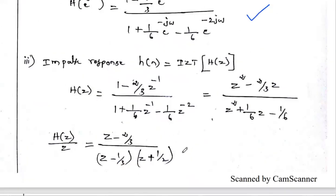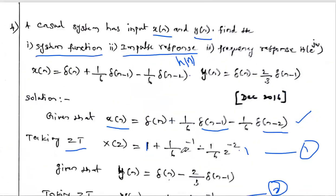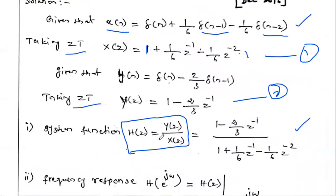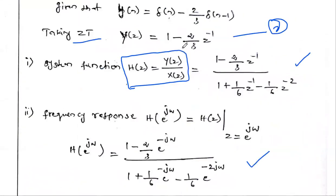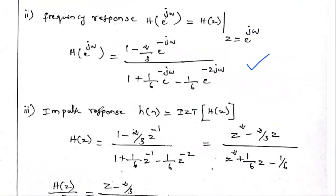So the impulse response is h(n) = −(2/5)(1/3)^n · u(n) + (7/5)(−1/2)^n · u(n). This is the impulse response of the given system. In summary: for given x(n) and y(n), take the Z-transform and divide to get the system function H(z).